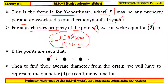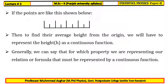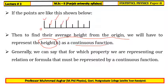For any arbitrary property R of the thermodynamic system, equation two can be written by replacing x with R. This is the general formula for any arbitrary property of a thermodynamic system. If the property is a continuous function — for example, continuously varying radius or height — then the average must be calculated by representing that property as a continuous function.